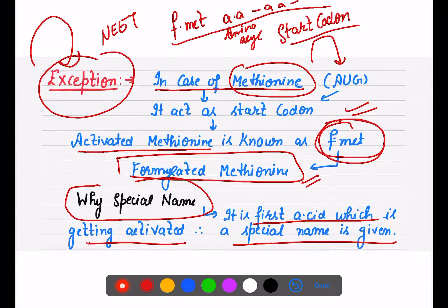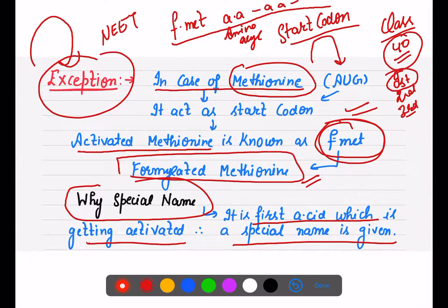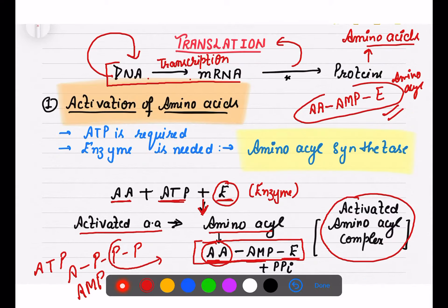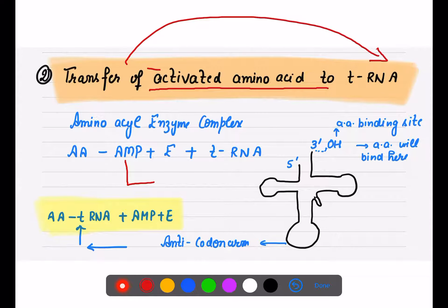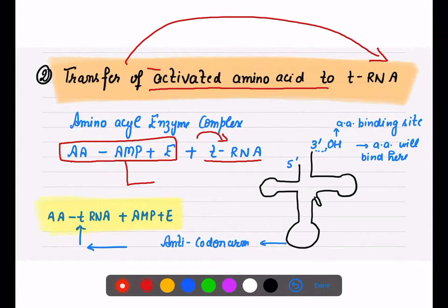A special name is given to methionine because it is the first amino acid — just like in a class of 40 students, only the first, second, or third position students get a prize. Similarly, the first amino acid receives the exceptional name f-methionine. Now, the activated amino acids are transferred to tRNA. The aminoacyl-enzyme complex then forms a complex with tRNA.